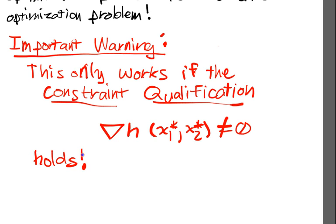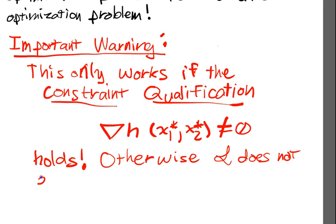So we could only do this identification if my gradient of the constraint function didn't vanish. Otherwise, L does not encode the constrained optimization problem.